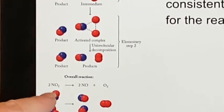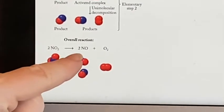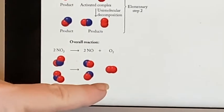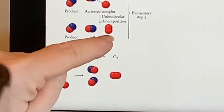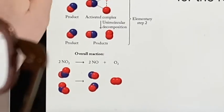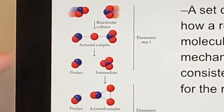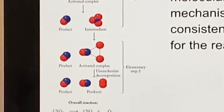And overall, you started with two nitrogen dioxides and you ended up with two nitrogen monoxides and a normal diatomic oxygen. And that is what we see here. So this was a set of steps. This was a reaction mechanism made of elementary steps.